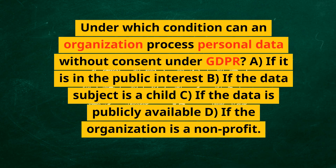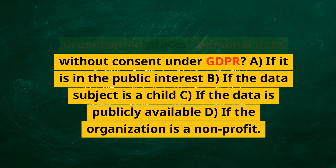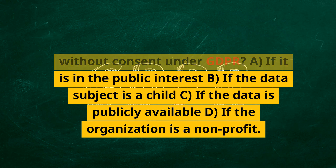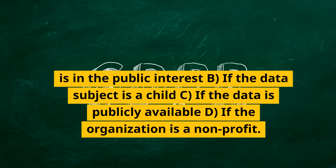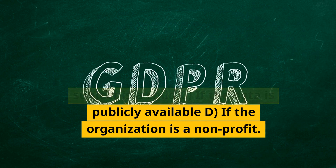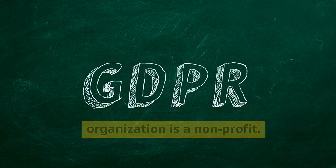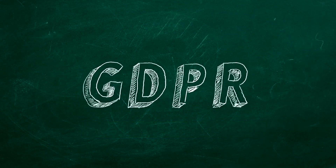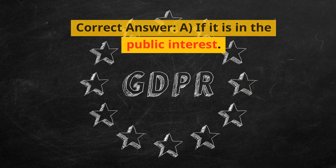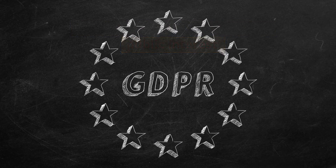Under which condition can an organization process personal data without consent under GDPR? A. If it is in the public interest. B. If the data subject is a child. C. If the data is publicly available. D. If the organization is a non-profit. Correct answer: A. If it is in the public interest.